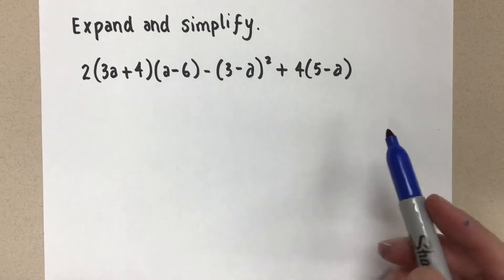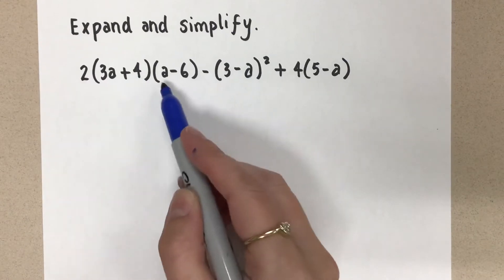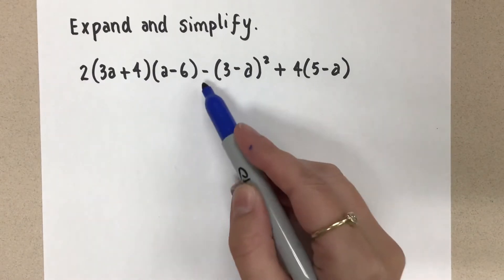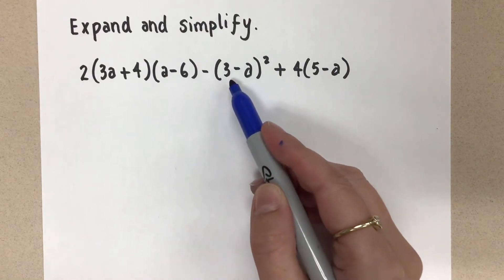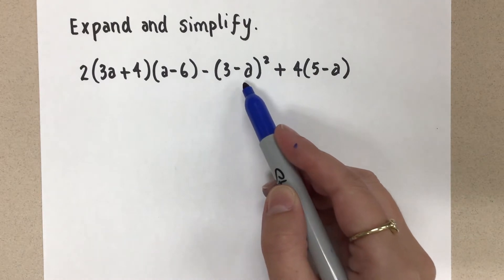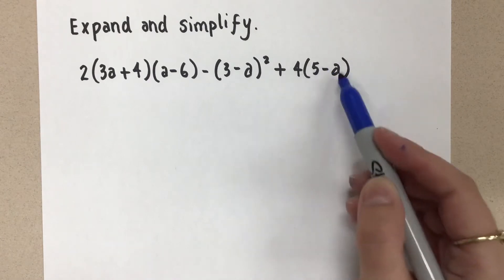So let's just talk about what I noticed first. I have this coefficient of two and I have a binomial times a binomial. And then I've got a minus. And here this 3 minus a squared, that's a binomial times a binomial. So that is a 3 minus a times 3 minus a. Be careful with that.